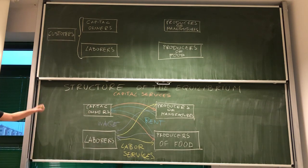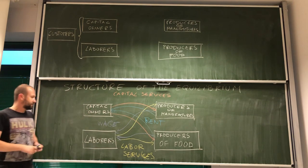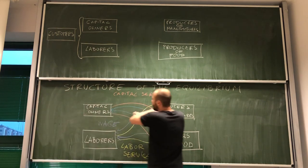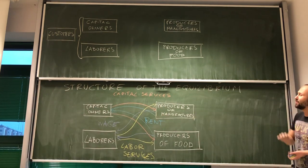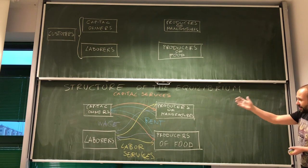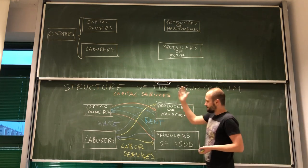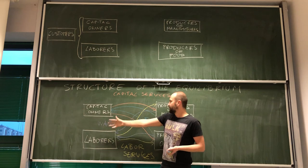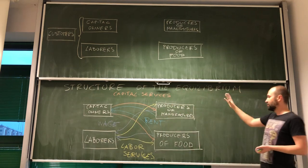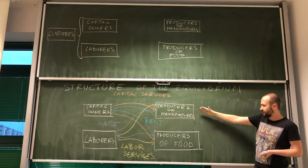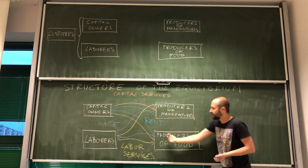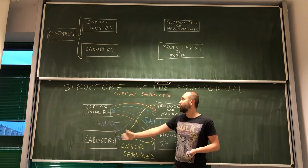Okay, and actually, this summarizes the first type of the relationships between those agents. So, on one hand, we see factors of production providing their services to the companies that produce either manufacturers or food. And in return, they are getting either rent or wage.